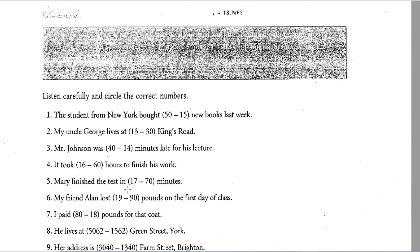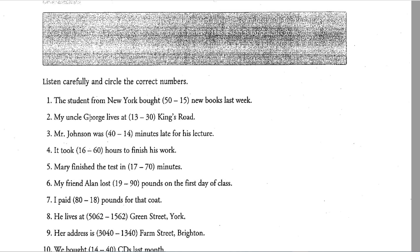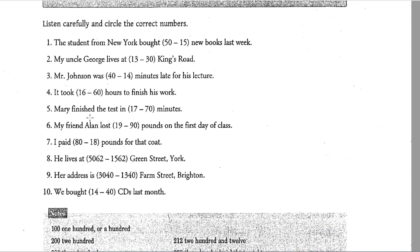Exercise 6: Discriminating between teens and tens. The teen numbers — those between 13 and 19 — are often confused with the multiples of 10: 30, 40, 50, 60, 70, 80, and 90. This lesson is for practice in hearing the differences in the following pairs: 13/30, 14/40, 15/50, 16/60, 17/70, 18/80, 19/90.